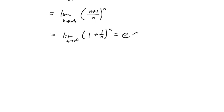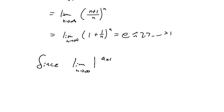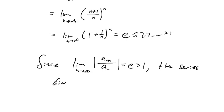This is important because e is approximately 2.718, which is greater than 1. So since the limit as n approaches infinity of |a_(n+1) / a_n| equals e, which is greater than 1, the series diverges by the ratio test.